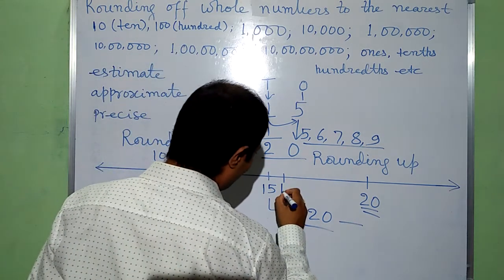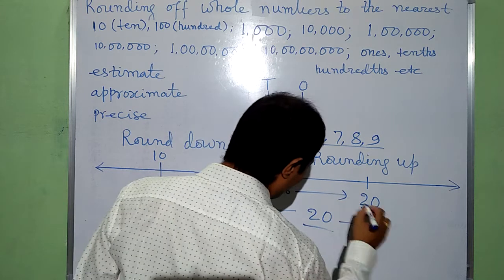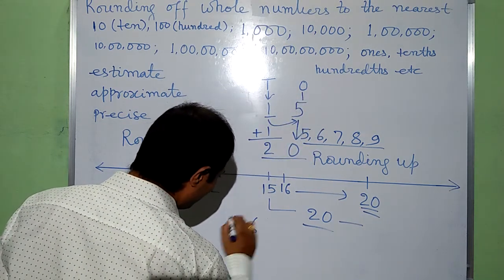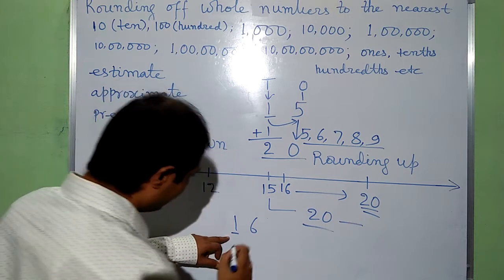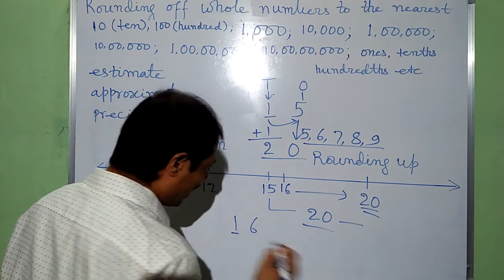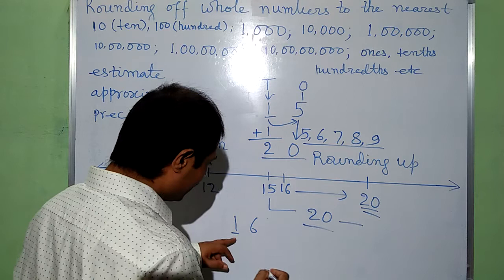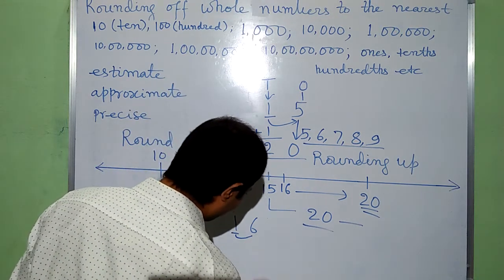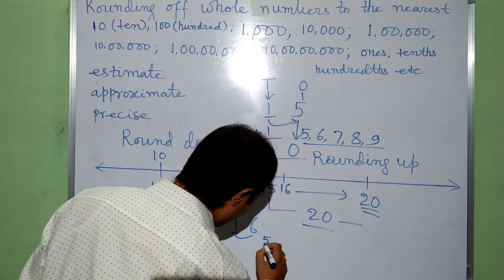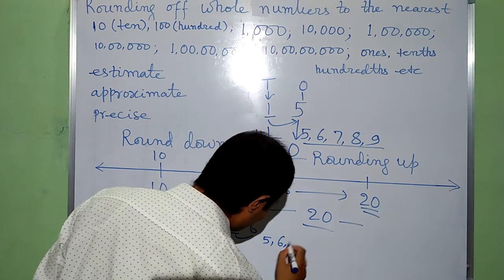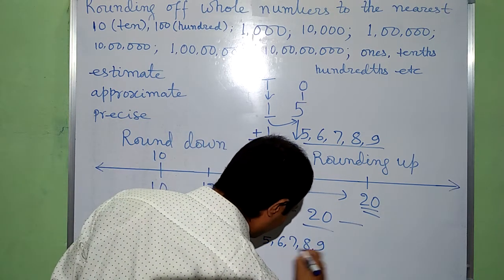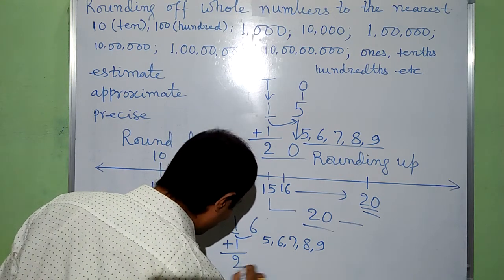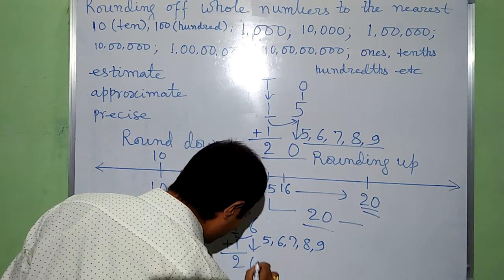If the number is 16, even then it will round to 20. For 16, at the 10's place we have 1. We look at the digit just to the right of this 1, that is 6. Since 6 is 5, 6, 7, 8, or 9, we add 1 to the target digit. Then it becomes 2 and the 1's place is changed to 0, giving 20.